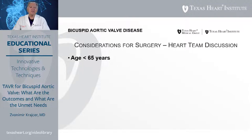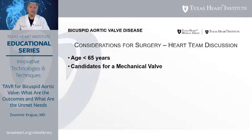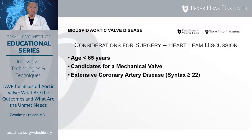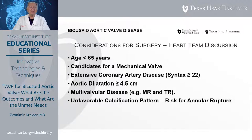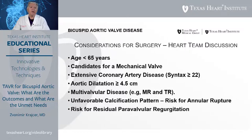When should we consider surgery for patients with bicuspid aortic pathology? Studies have shown that patients younger than 65 years of age should undergo SAVR or surgical repair. Also, patients who are candidates for mechanical valve, those with extensive coronary artery calcifications and disease, patients with significant dilatation of the ascending aorta of more than 4.5 centimeters, patients with multivalvular disease, those with unfavorable calcification patterns that might lead to a higher risk of annular rupture, those at risk of residual paravalvular regurgitation, and patients with challenging access due to hostile iliofemoral anatomy.